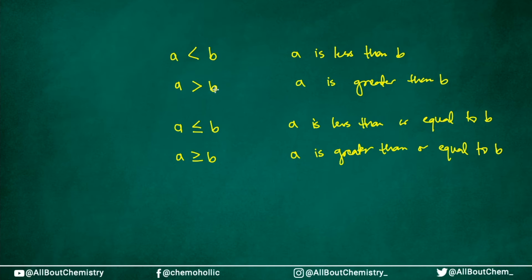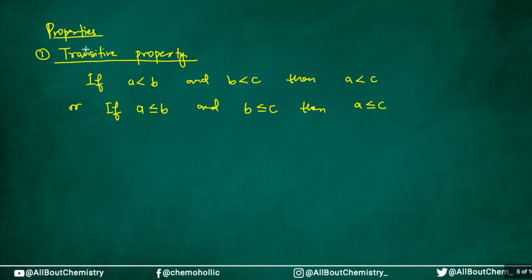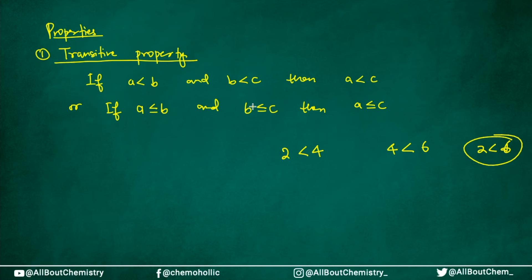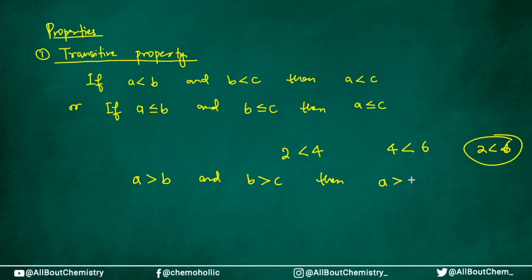Now let's quickly understand some properties. The first is the transitive property: if a < b and b < c, then a < c. For example, if 2 < 4 and 4 < 6, then of course 2 < 6 also. This also holds for the 'less than or equal to' sign — if a ≤ b and b ≤ c then a ≤ c — and for the 'greater than' sign: if a > b and b > c then a > c.